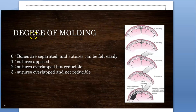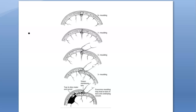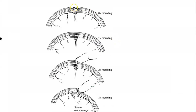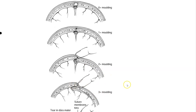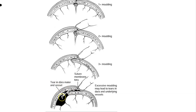There is also something called the degree of molding: zero, one, two, and three. This is also asked in exams. Zero shows no significant molding. One-plus is where the bones are kind of touching each other. Two-plus is where one is going over the other. Three-plus is going way beyond, and here they have shown a tear in the dura mater - it went so much that it got torn, with tearing in the vessel and some bleeding.